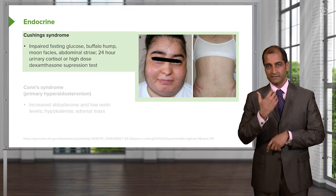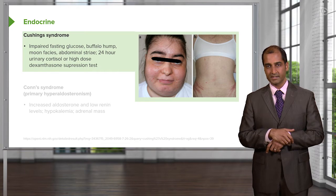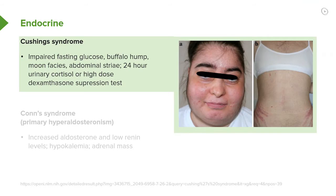Look at the patient: moon face, trunk obesity, striae, and buffalo hump in the back of the neck. That's your patient in general with Cushing's due to excess glucocorticoid from whatever source. To be complete, other sources include the anterior pituitary and the lung — most commonly small cell lung cancer.